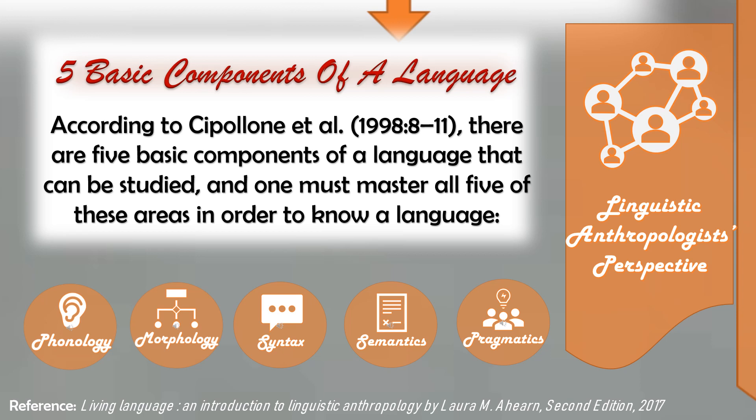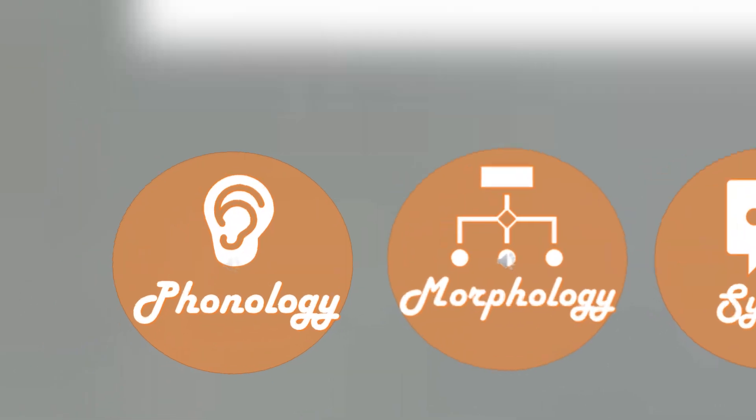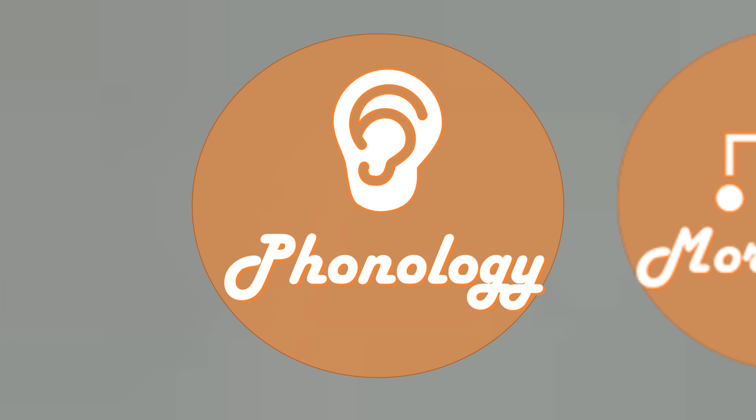According to Cipollone and his colleagues, there are five basic components of a language that can be studied, and one must master all five of these areas in order to know a language. The first is phonology — the study of sound in language. In order to know a language, one must be able to recognize and produce the sounds, or phonemes, that are meaningful in that language.